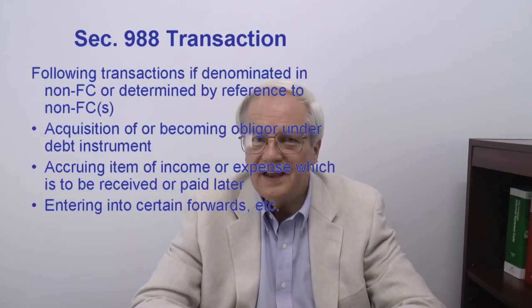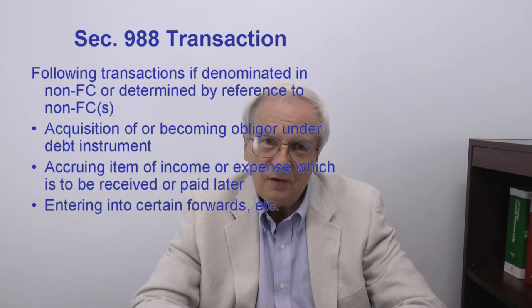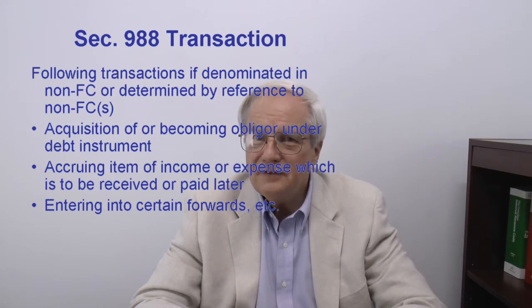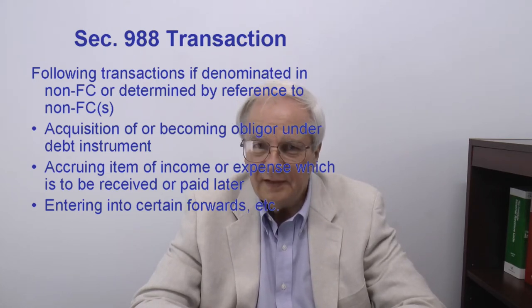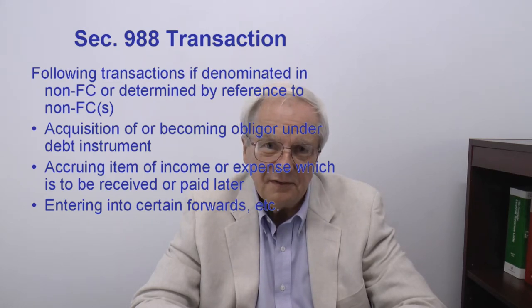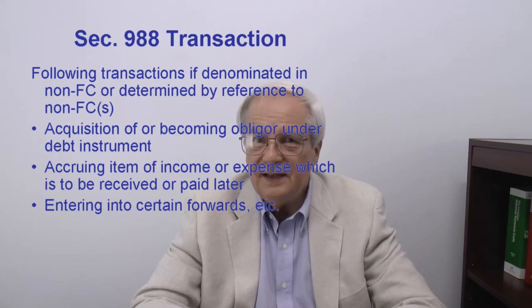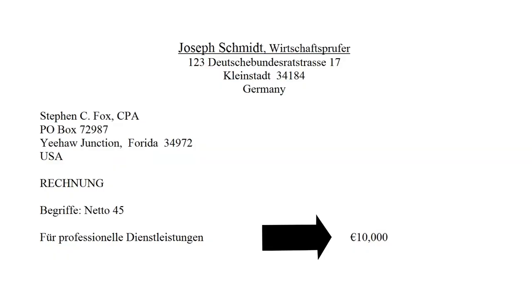A Section 988 transaction is any of a variety of things, if and only if they are denominated in a non-functional currency or determined by reference to a non-functional currency. These things include accruing an item of income or expense — just like in my example — if the item is to be settled later. My functional currency is dollars, so the invoice in euros is in a non-functional currency. Section 988 transactions also include acquiring or becoming an obligor under a debt instrument. So if your functional currency is dollars and you borrow money in euros, the borrowing is a Section 988 transaction.